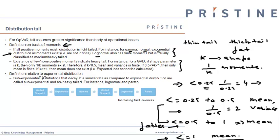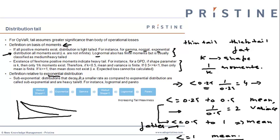Another definition of tail heaviness is in relation to the exponential distribution. Distributions that decay at a lesser rate as compared to exponential distribution are called sub-exponential distributions, and will of course be heavy-tailed because they stretch more in the extreme region. On the basis of these definitions, this is the rank ordering of various distributions in terms of their increasing tail heaviness.